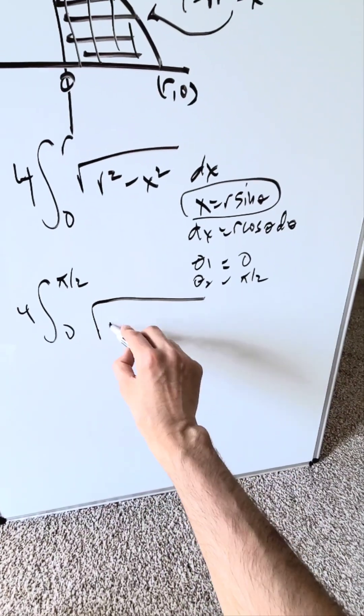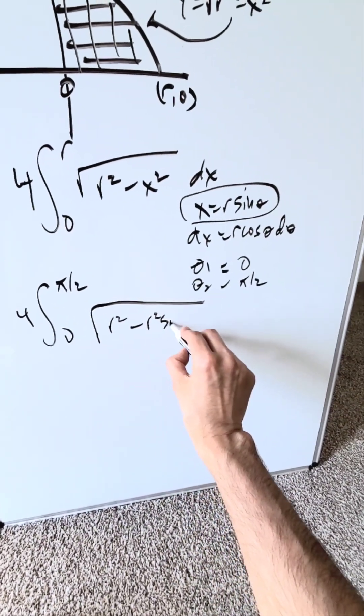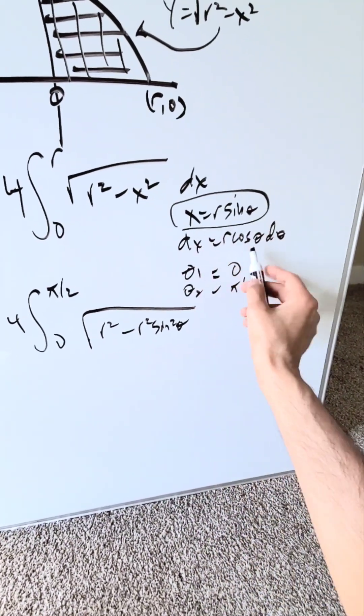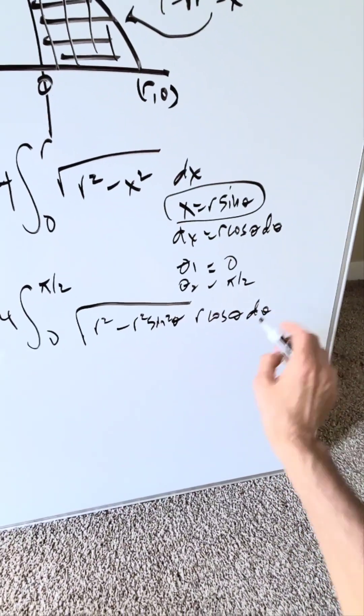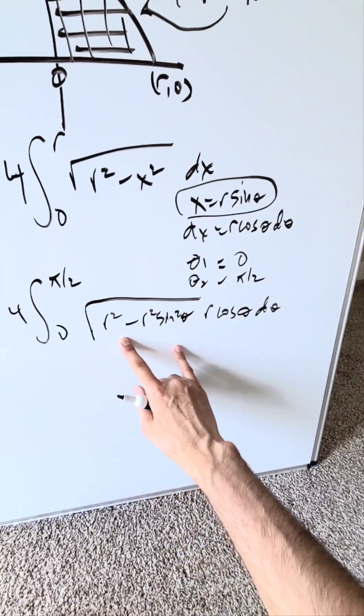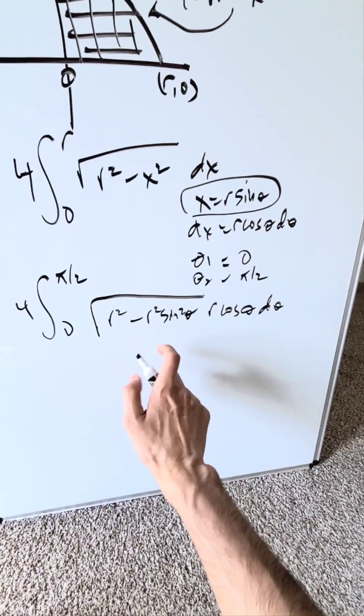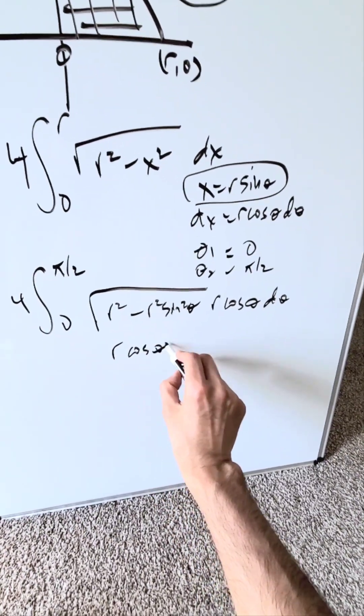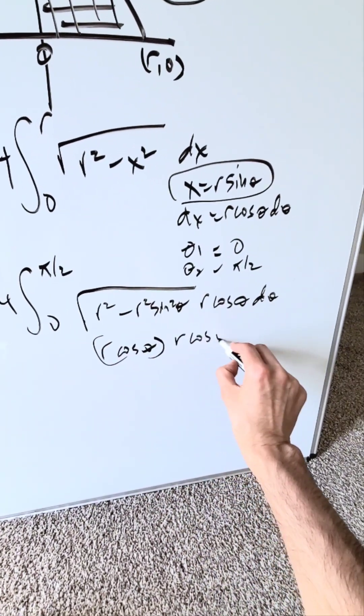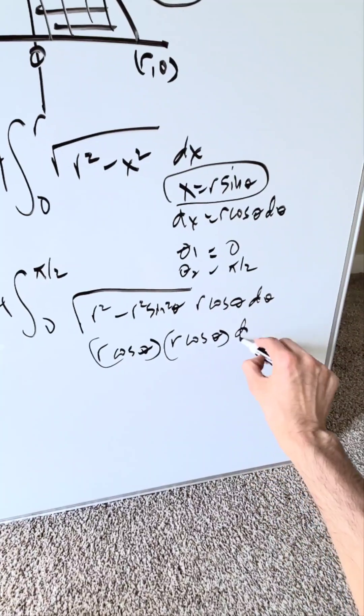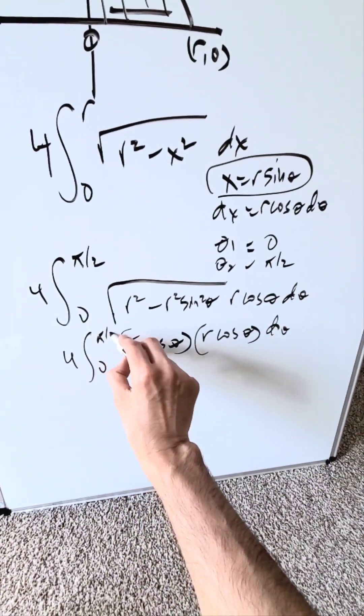With these substitutions, what do you have? You have r squared minus r squared sine squared theta, and then you have dx is equal to r cosine theta d theta. If you run this through your basic trigonometric identities, from this right here, you'll get here r cosine theta. Then you have this r cosine theta, cosine theta sitting outside, and you have that. You have a 4, 0, pi over 2.